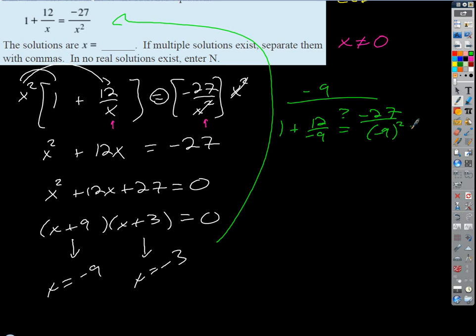That's going to be 1 minus, and that would reduce to four thirds, equals negative 27 over 81. On the left side we end up getting negative one third. Is that the same thing as what we get over here? Yeah it is. If I reduce this, divide the top and bottom by 27, I get negative one third. So that one checks, that's a good answer.